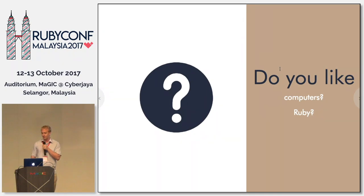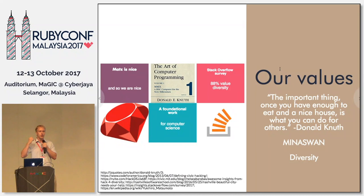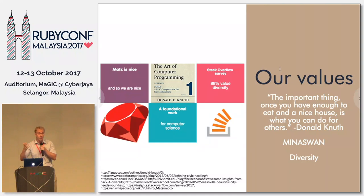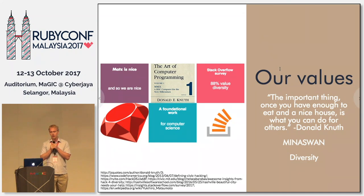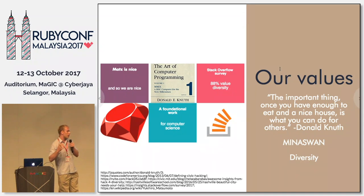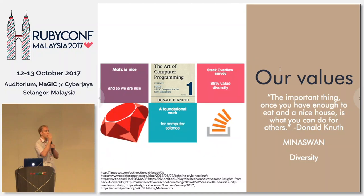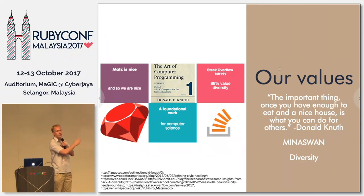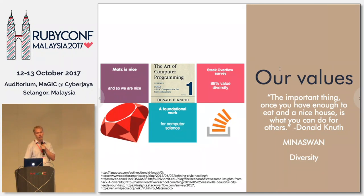Do you like computers, and do you like Ruby? Then I would suggest that the values of civic hacking probably align really well with your own values. Rubyists — if you can say one thing about us, it's that we're nice, and civic hacking is a nice thing to do. The Art of Computer Programming, a foundational book in computer science, points out that once you have enough for yourself, the most significant thing you can do as a person is to help other people — and civic hacking is an example of that. Most developers value diversity, and civic hacking is oftentimes an effort to improve diversity in communities.